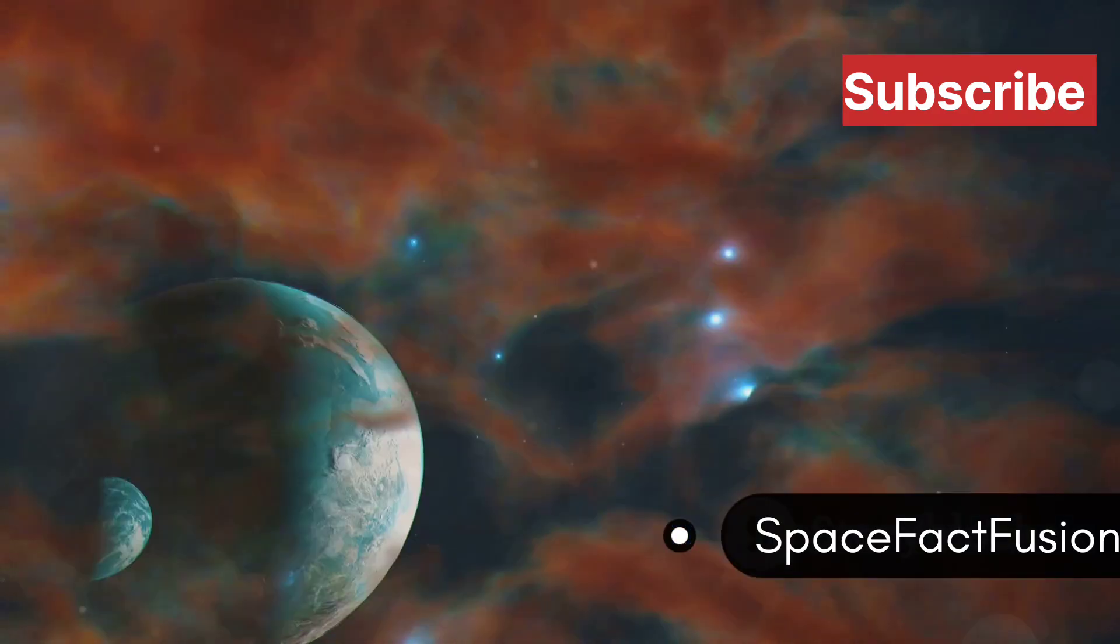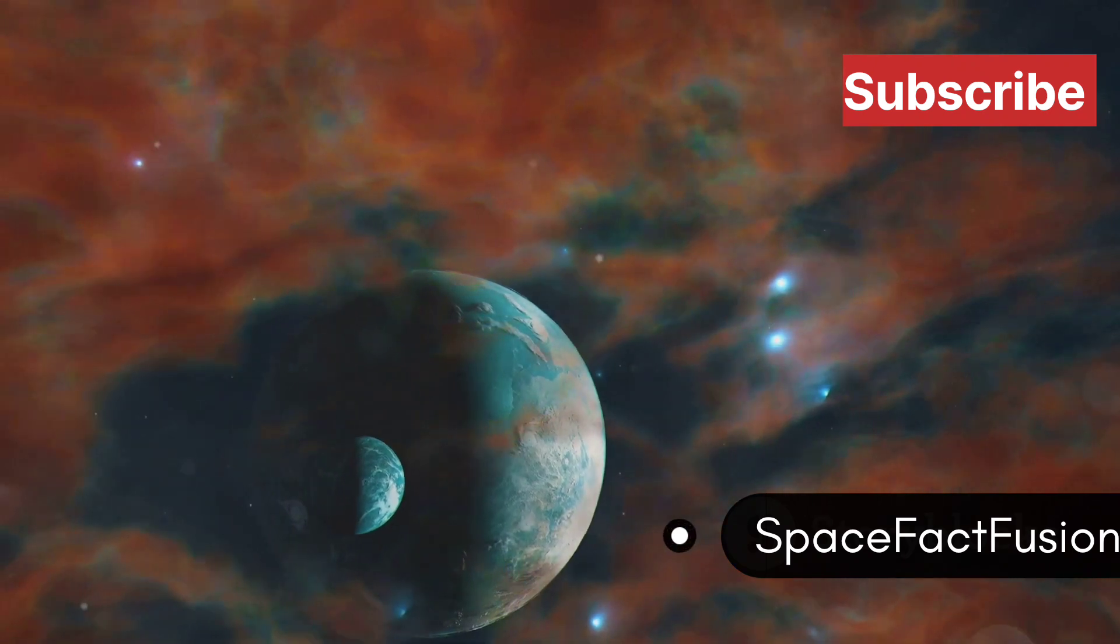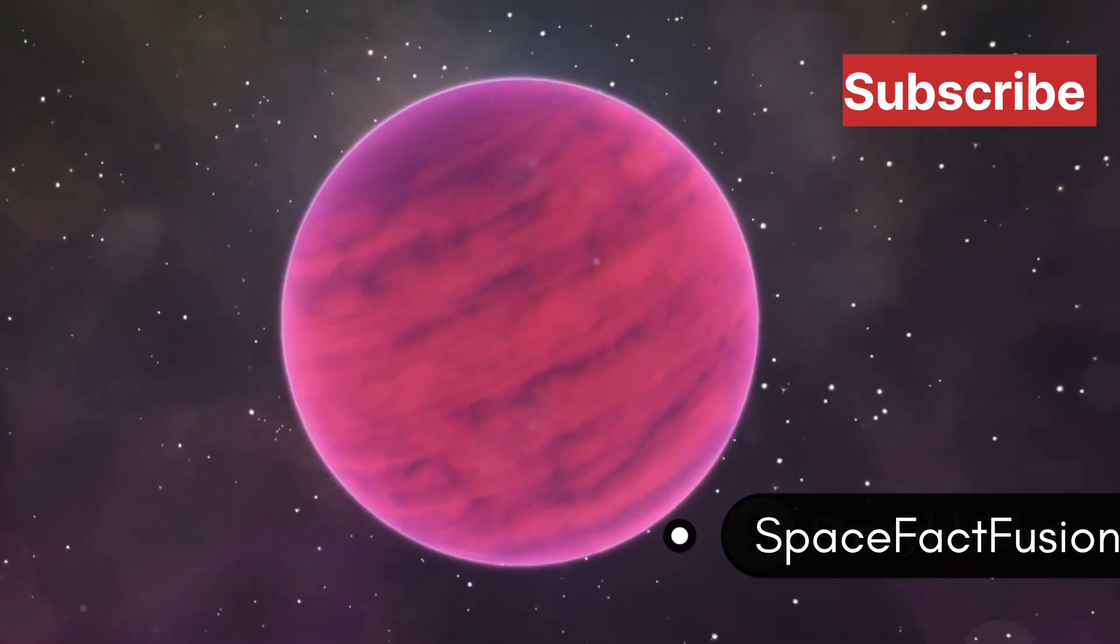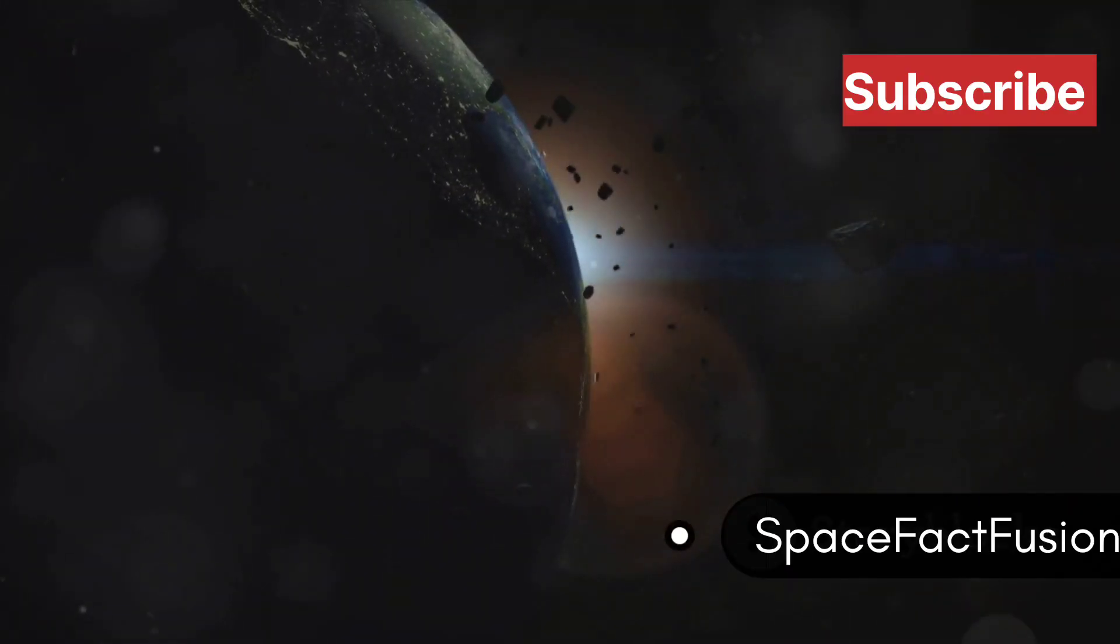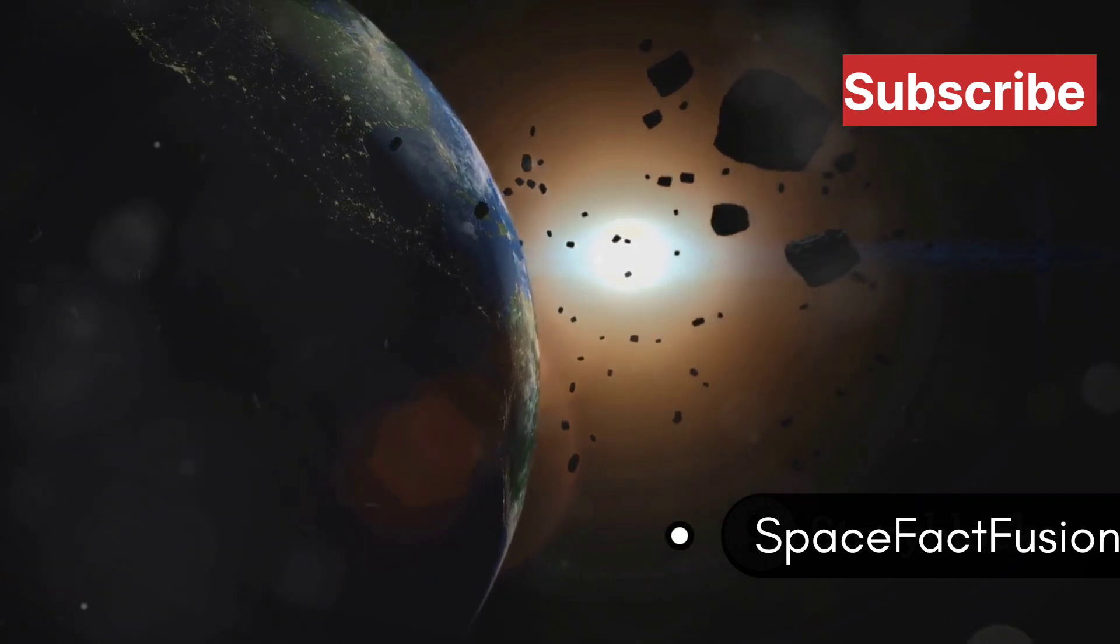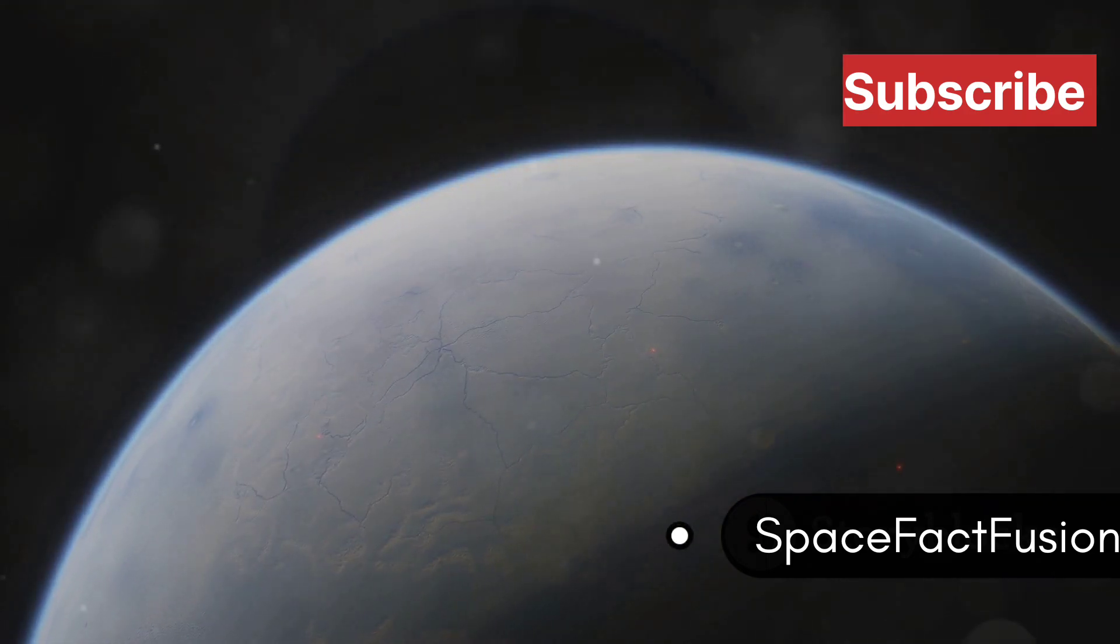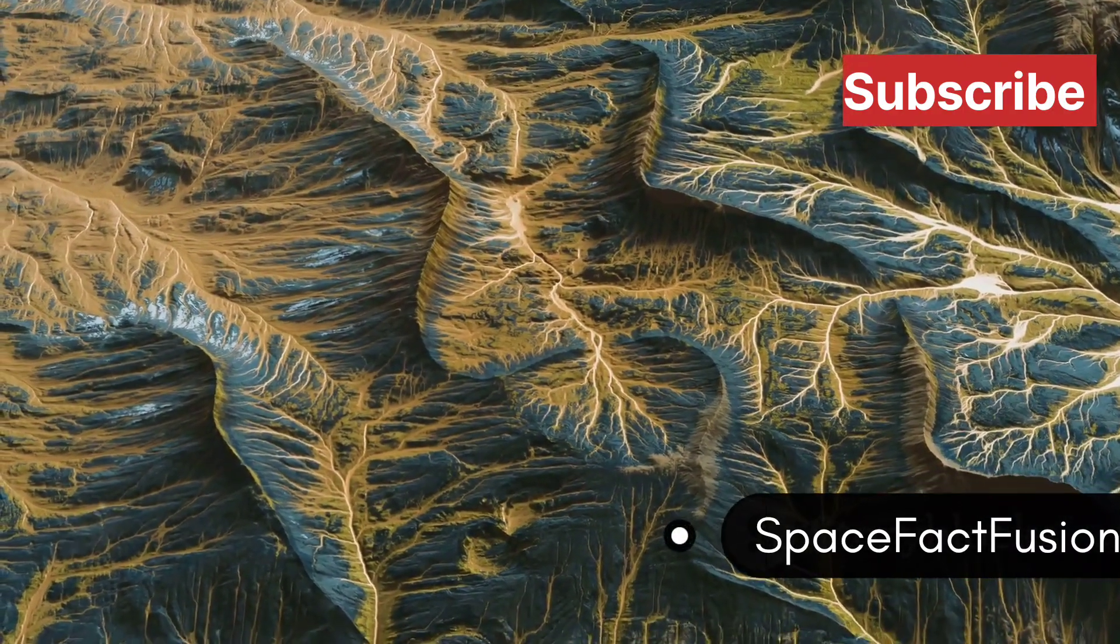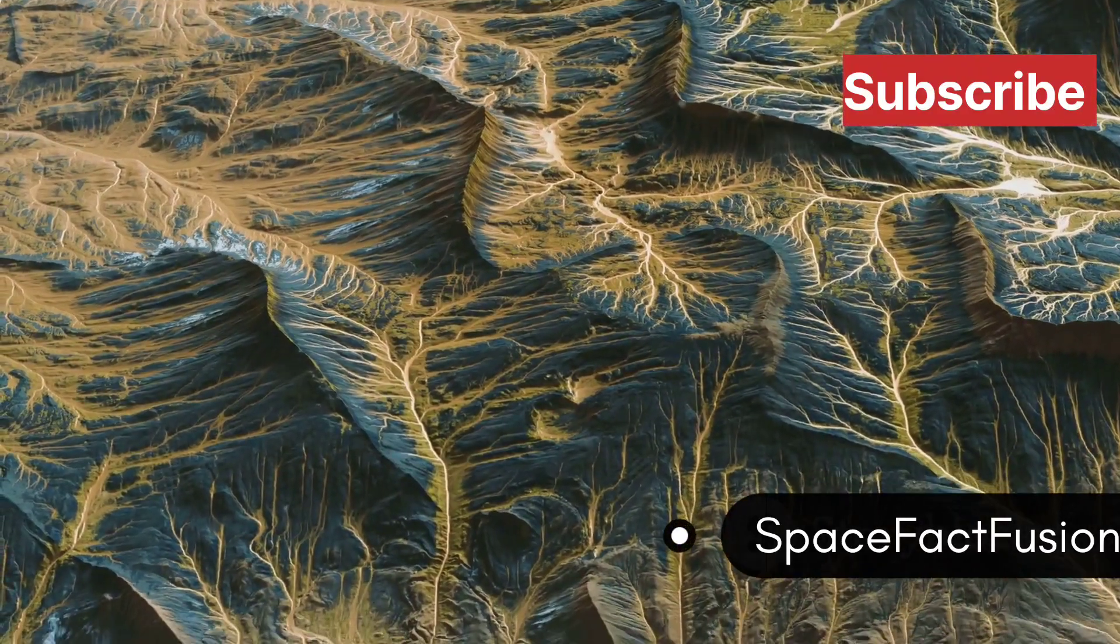Our next stop takes us to Gliese 581c, a planet that has sparked endless debate among astronomers. This super-Earth orbits a red dwarf star in the habitable zone. However, it's tidally locked with one side in perpetual daylight and the other in eternal darkness. The day side is likely scorching hot while the night side is freezing cold. Plants on Gliese 581c, if they exist, would need to photosynthesize different light, possibly evolving hues of black or dark red.